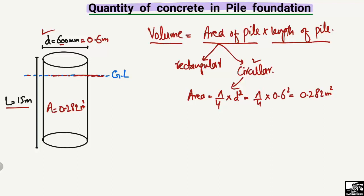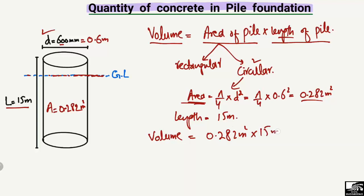Now we multiply the area by the length of the pile. The total length of the pile is given as 15 meters. So the volume equals 0.282 square meters × 15 meters, which gives us a total volume of 4.23 cubic meters. This is the total amount of concrete inside this pile.